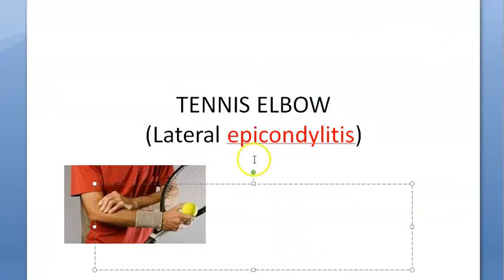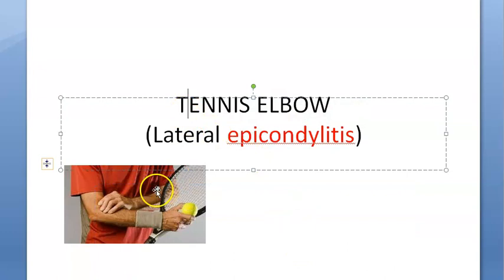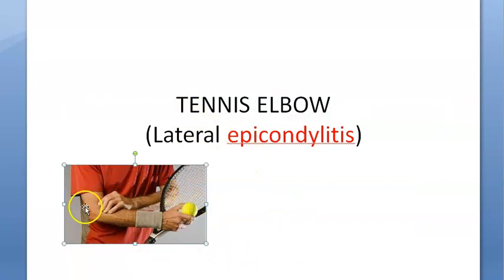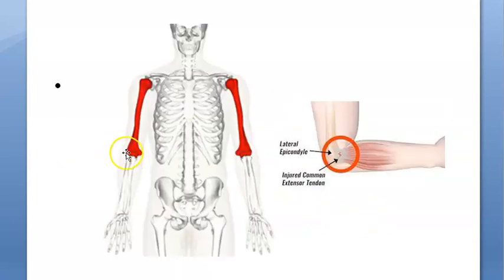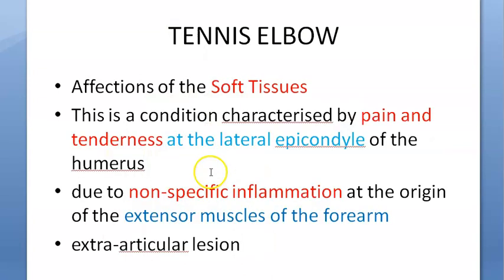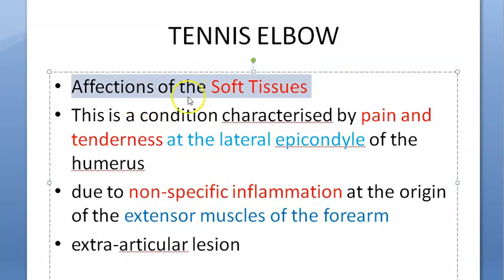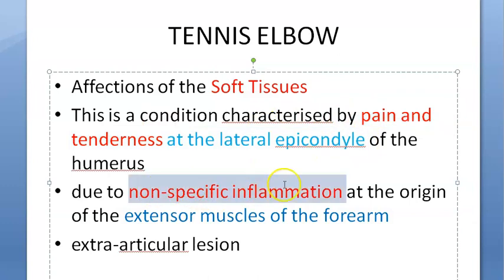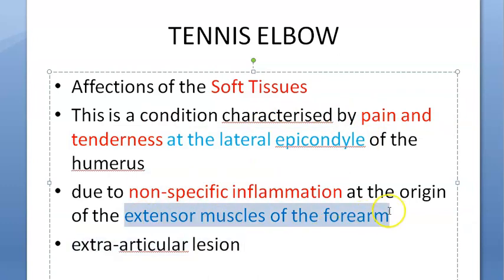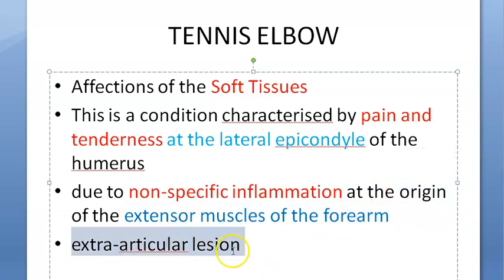To recap: tennis elbow, also called lateral epicondylitis, is a soft tissue problem at the lateral epicondyle of the humerus. There is pain and tenderness there due to non-specific inflammation of the extensor muscles of the forearm at their origin. It is extra-articular — nothing to do with the joint itself.